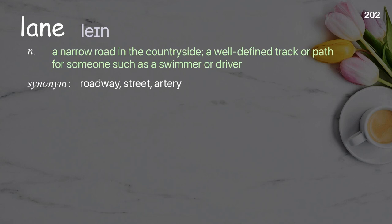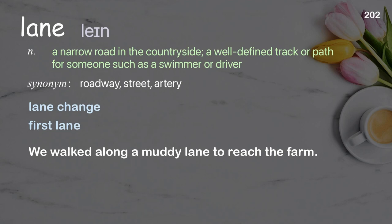Lane: a narrow road in the countryside; a well-defined track or path for someone such as a swimmer or driver. Examples: lane change; first lane; we walked along a muddy lane to reach the farm.